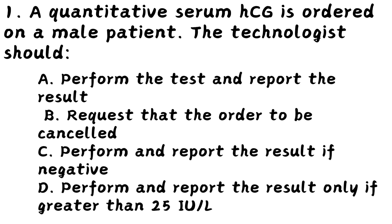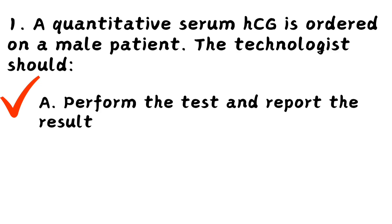Question 1. A quantitative serum HCG is ordered on a male patient. The technologist should: Option A, perform the test and report the result. Option B, request that the order be cancelled. Option C, perform and report the result if negative. Option D, perform and report the result only if greater than 25 IU per liter. The right answer is Option A — perform the test and report the result — because quantitative HCG is ordered on a male patient in suspected cases of tumours.